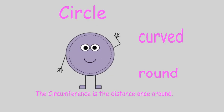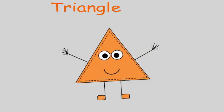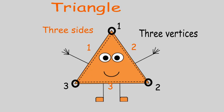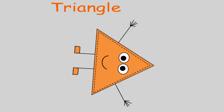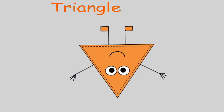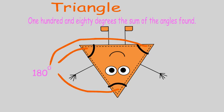The triangle has three sides at least, three vertices. The shape is still a triangle if it's upside down. 180 degrees is the sum of the angles found.